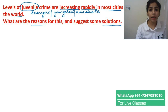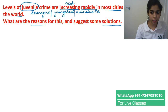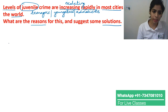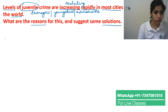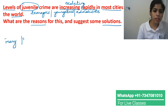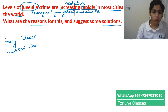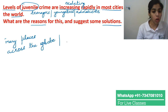Levels of juvenile crime are increasing rapidly. Instead of 'increasing rapidly' we can write 'escalating.' Instead of 'most cities around the world,' we can write 'many cities,' 'many places,' 'across the globe,' or 'throughout the world.' We have written the synonyms and understood the question.